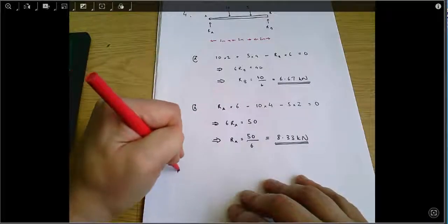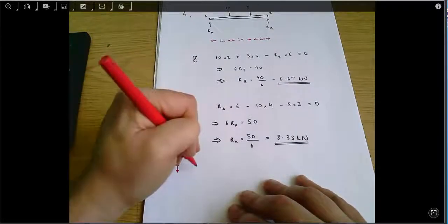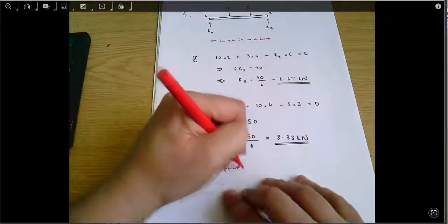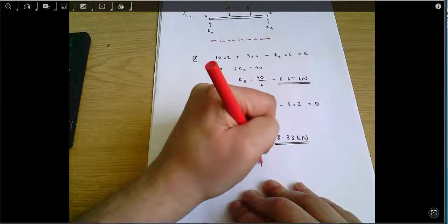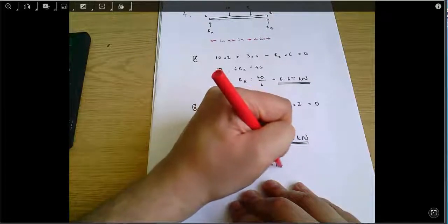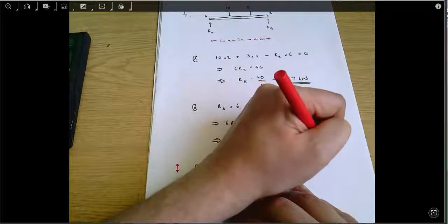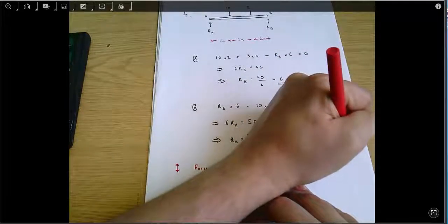I can just check on vertical equilibrium. Forces acting upwards equals RA plus RB, which equals 6.67 plus 8.33, which equals 15 kilonewtons.